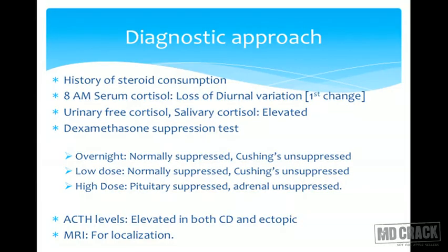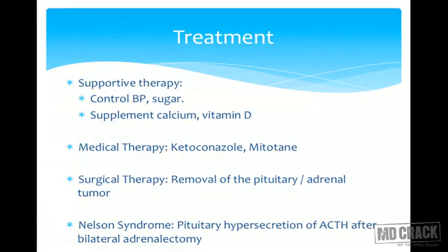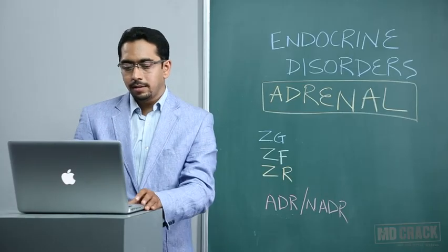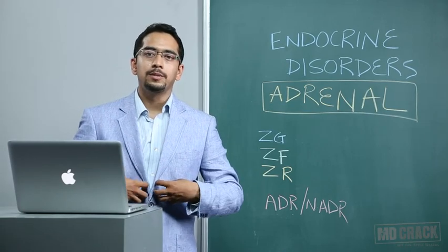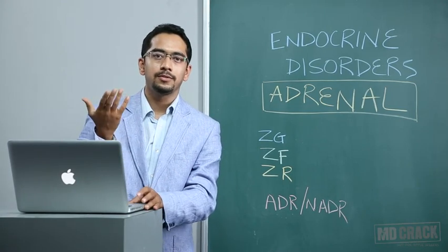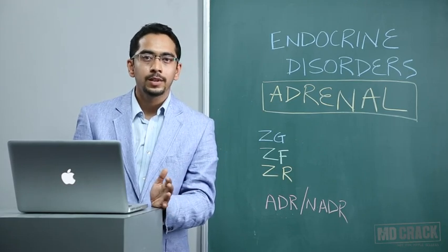ACTH levels are elevated in central Cushing's disease and ectopic ACTH production. MRI helps with localization of the tumor. Treatment is supportive — controlling blood pressure, blood sugars, and supplementing calcium and vitamin D. Surgical removal of the pituitary or adrenal tumor is the main treatment, but until surgery, ketoconazole may be started as it antagonizes steroid production. Mitotane is another drug that destroys adrenal cells, reducing cortisol production. Nelson syndrome occurs after bilateral adrenalectomy when the pituitary produces excess ACTH if the patient has not been replaced with steroids.